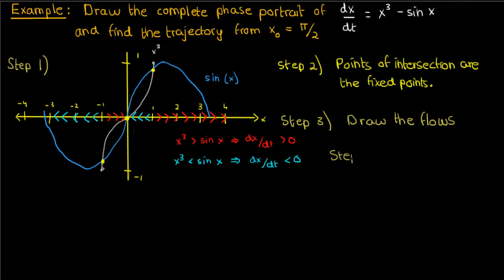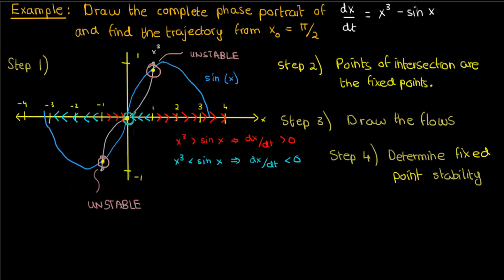Now step 4 is where we determine the stability of the fixed points, and that's pretty simple. These two points are where the flows tend to diverge, which means that they're unstable. The point at x equals 0, in contrast, is where the flows tend to converge, so it's stable.